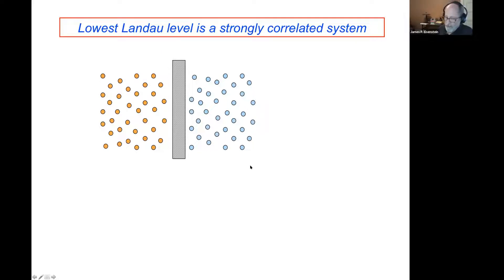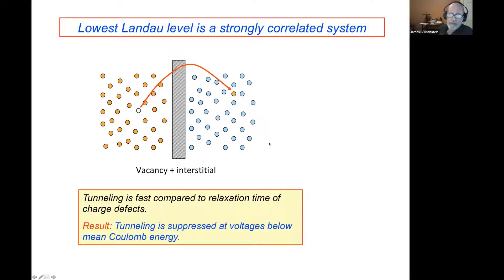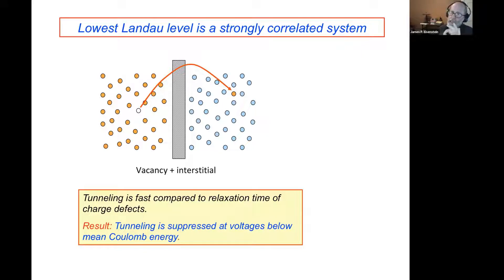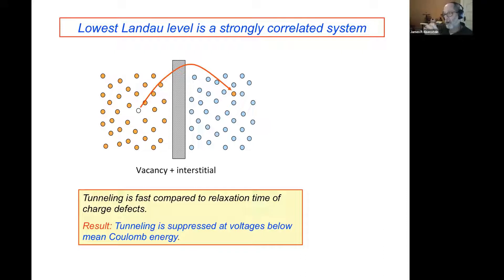If I try to take an electron and tunnel it from one layer to the other — tunneling is essentially an instantaneous process — I rip that electron out of one layer and stuff it into the other in essentially zero time. The electron gas doesn't know how to accommodate that because it's so strongly correlated that everybody would have to move, and that motion takes a long time. If you make a sharp defect in the electron density in a correlated system, its ability to relax is extremely slow at high magnetic fields.